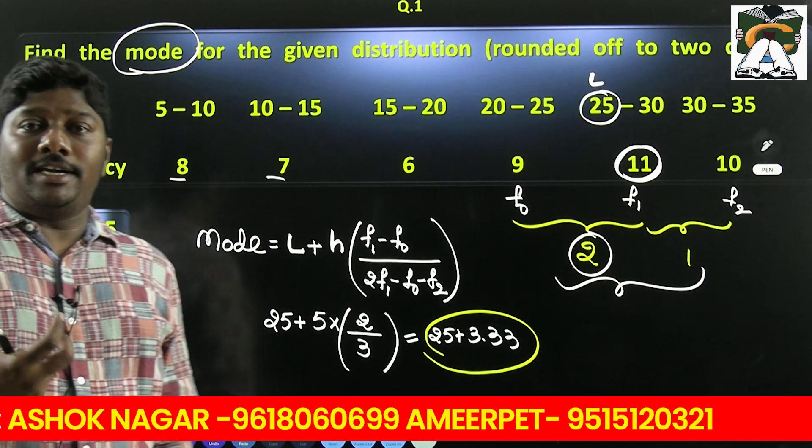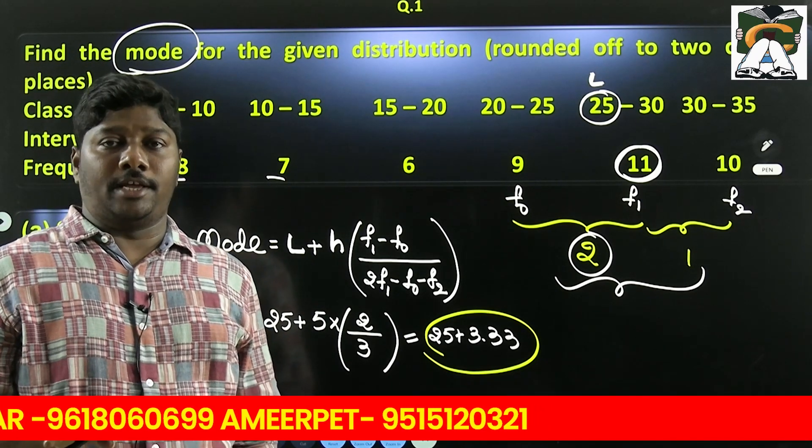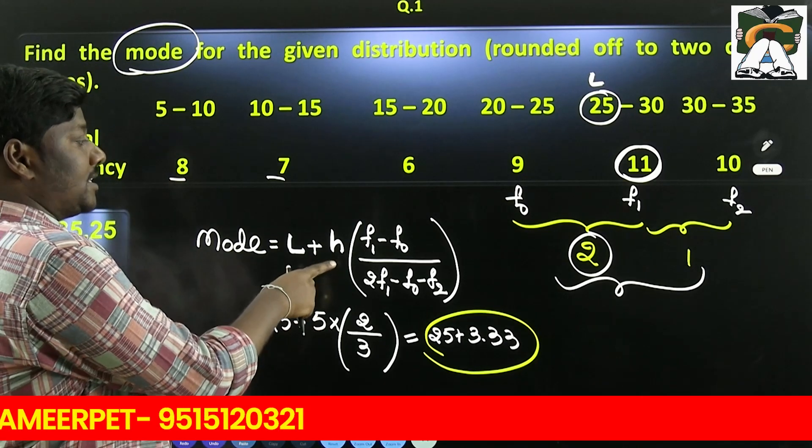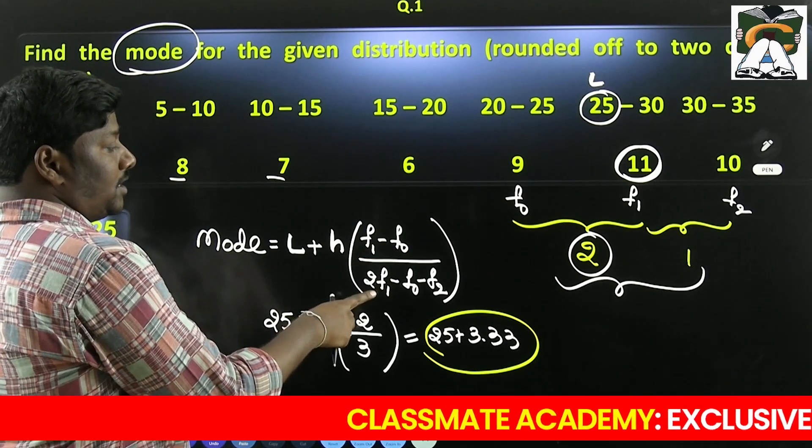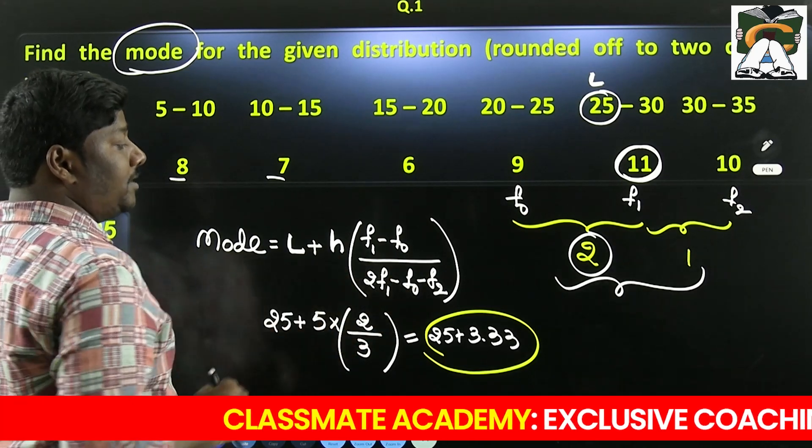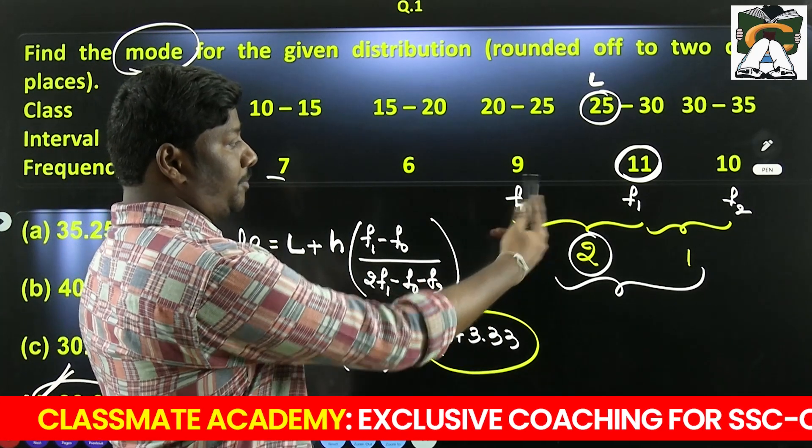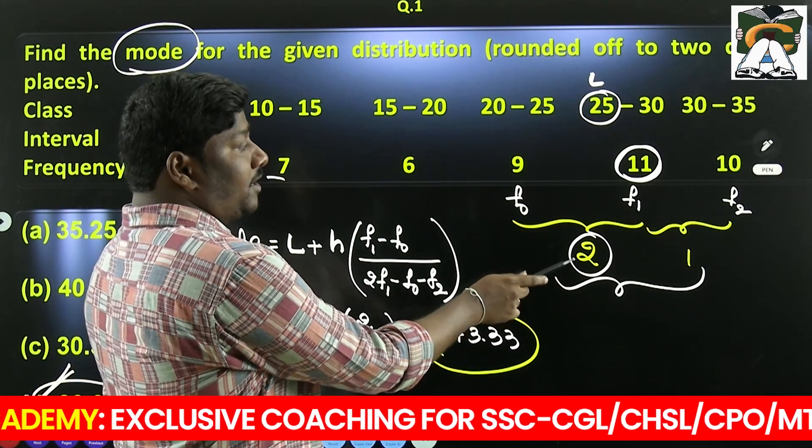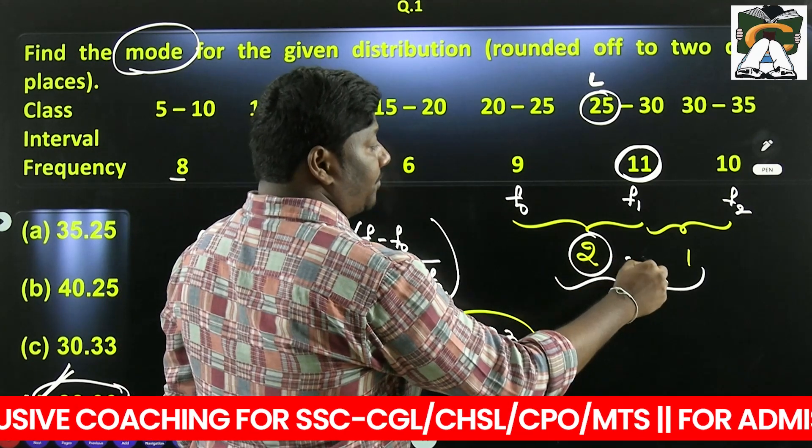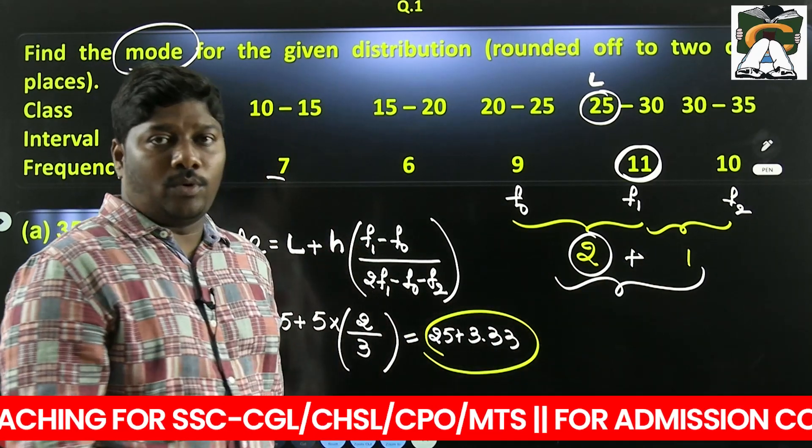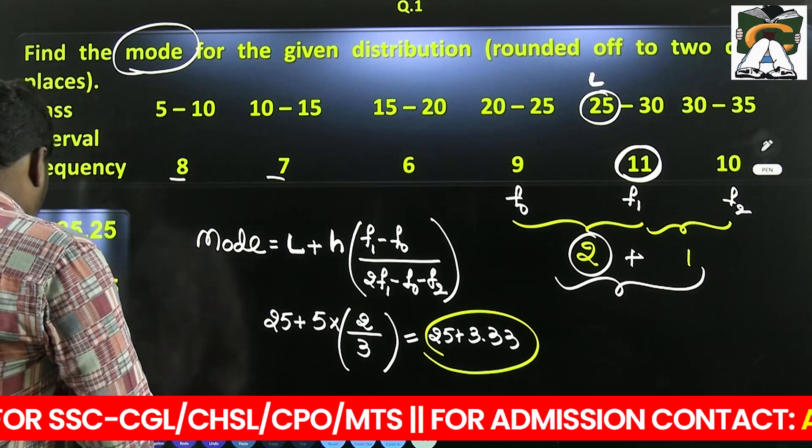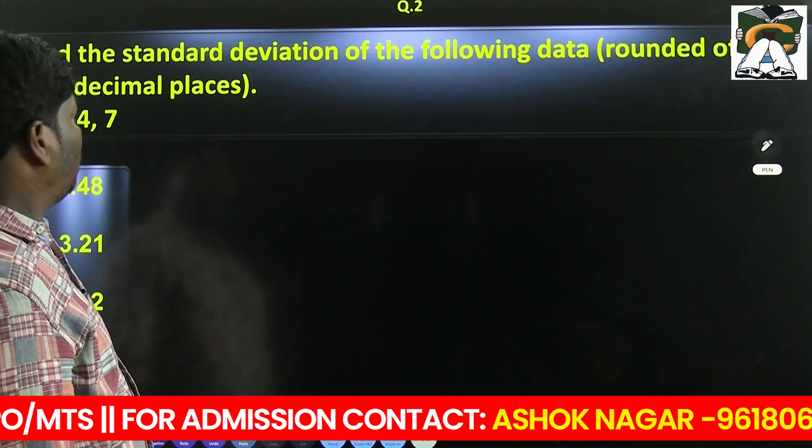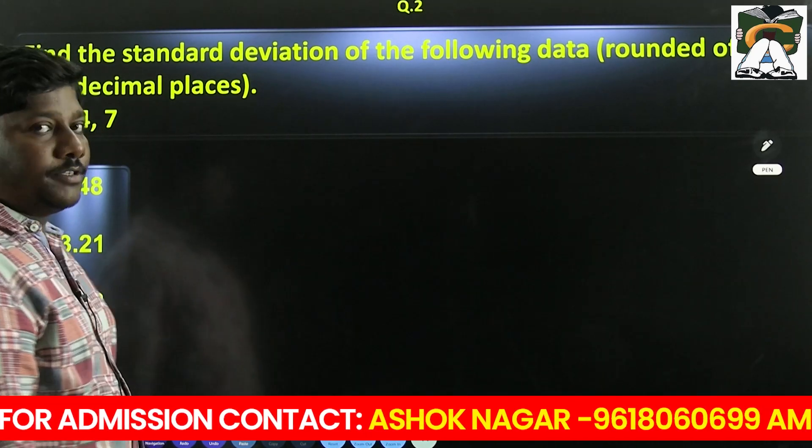This question may seem difficult, but with the formula it becomes very simple. The formula is L plus class size times (f1 minus f0) divided by (f1 minus f0) plus (f1 minus f2). You just need to find these differences. The first difference is 2, divided by both differences which sum to 3. Now let's find the standard deviation of the following data, rounded off to two decimal places.